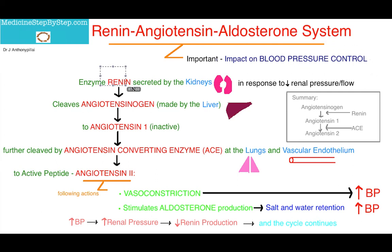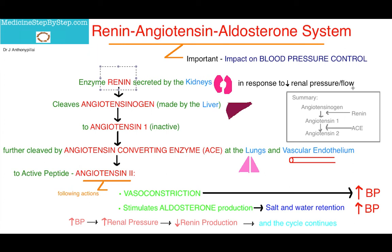So, renin. Renin is an enzyme; it's secreted by the kidneys. It's secreted in response to a reduced renal pressure or renal flow, which is an indication of having a lower blood pressure. So you've got a lower blood pressure and renin is then secreted.